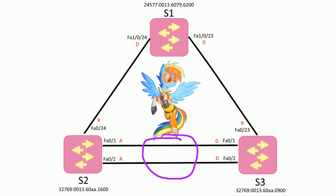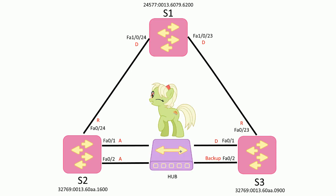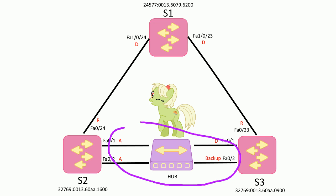Let's put a hub right here and see how it actually interacts with spanning tree. Here we have a hub — surprisingly, hubs are hard to find; I had to find it on eBay, which is kind of ridiculous. When we put this in, you'll notice that all these ports are in the same collision domain. Hubs just repeat electrical signals — you can think of this as one wire. So switches are seeing their own frames back on their own ports, and it's mass chaos.